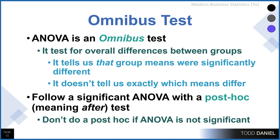ANOVA is different than t-tests in that with a t-test we compared two groups and could tell which was larger. With an ANOVA, we can simply tell that the groups are different — it is an omnibus test that tests for overall differences between groups. It tells us that some groups were significantly different, but it does not tell us which groups were significantly different from each other. So if we know at least one group is different from another, we must follow up a statistically significant ANOVA with a post hoc test. We do the post hoc after the significant ANOVA. If the ANOVA is not significant, there are no differences to find and we don't need a post hoc.